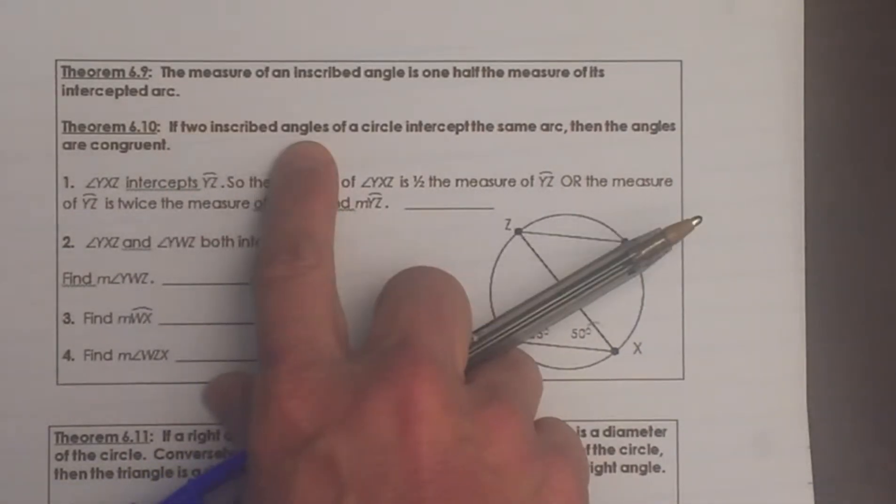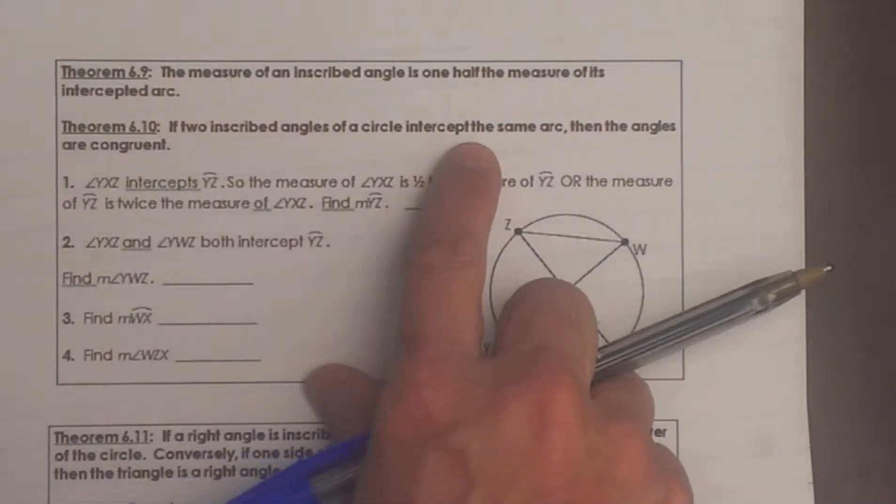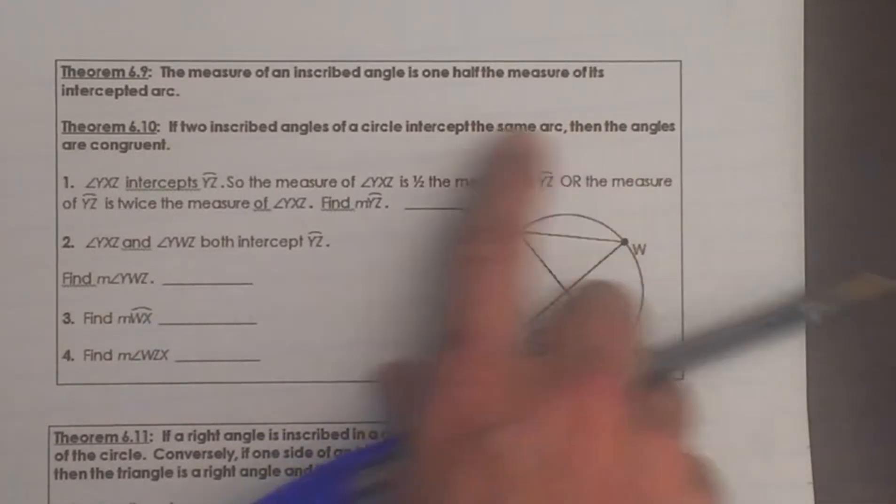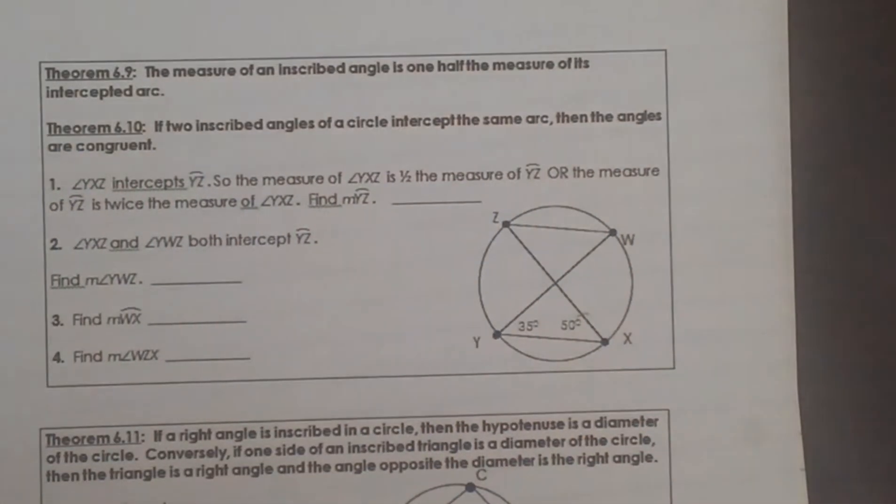If two inscribed angles of a circle intercept the same arc, then the angles must be congruent. So let's look at those two cases.